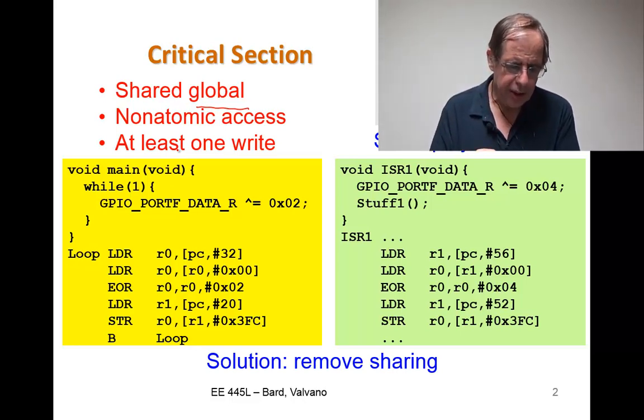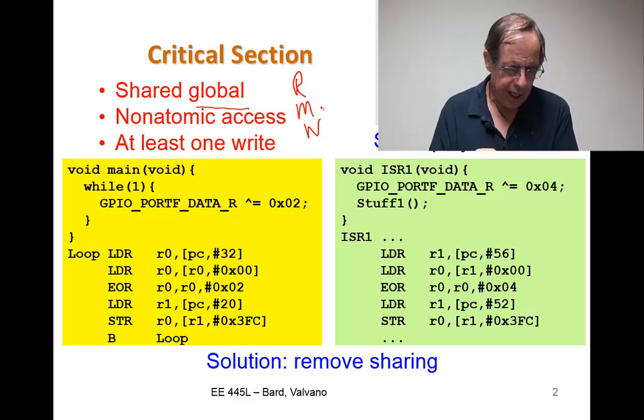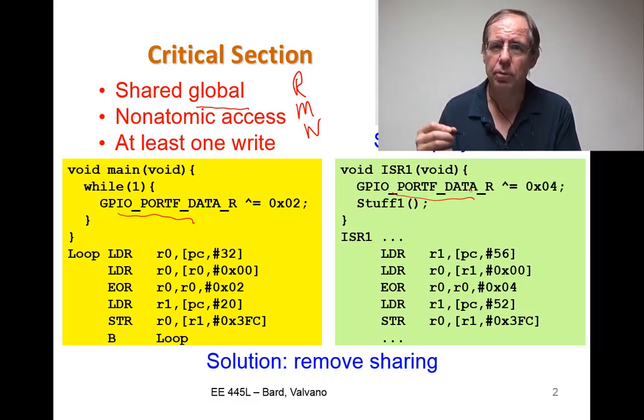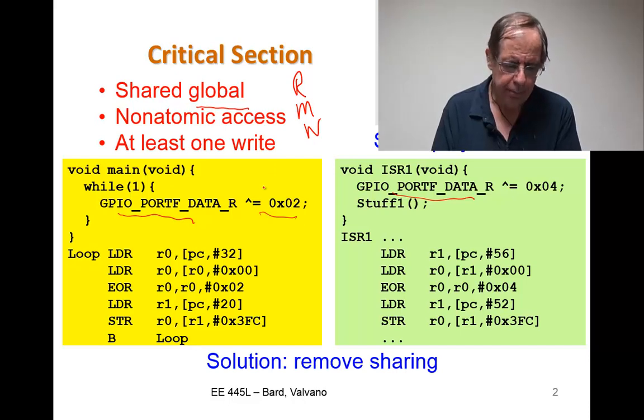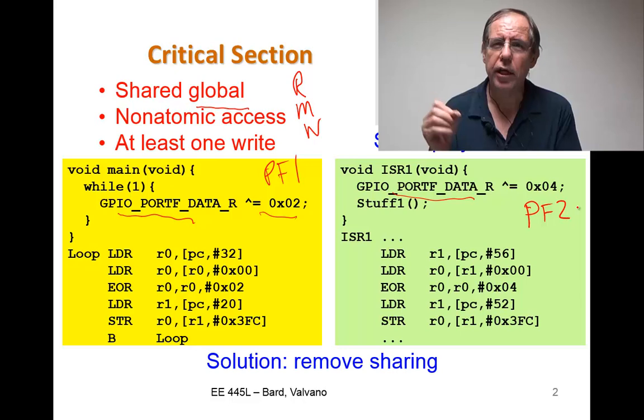The easiest one is called a read, modify, write. This is a multi-step sequence that is going to affect a global variable. In this case, it's going to be port F. Port F here is a shared global. It's a port, but it's still shared and it exists in the global space. The main program you see toggles PF1, and the interrupt service routine is going to toggle PF2. And here's what can go wrong.